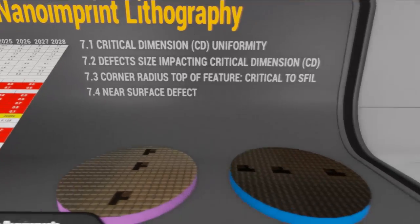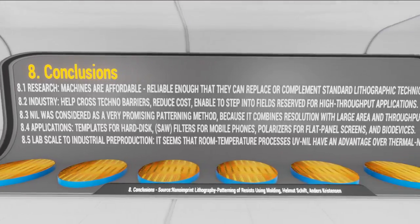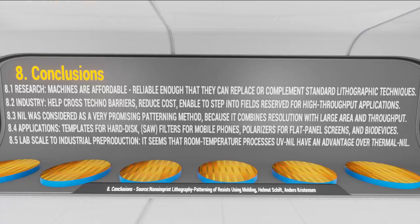In research, as long as the machines are affordable and reliable and known to replace or complement standard lithographic techniques, many research institutes and universities now have access to silicon process technology, which often comprises tools such as resist process technology, pattern generators, mask aligners, and etching and deposition facilities in a clean room environment. In industry, success will also depend on whether they fit into the process chain already established in a silicon clean room environment. Nano-imprint lithography has now passed a barrier from the laboratory scale to industrial pre-production, and it seems that room temperature processes based on UV exposure have an advantage over processes based on thermal cycles.